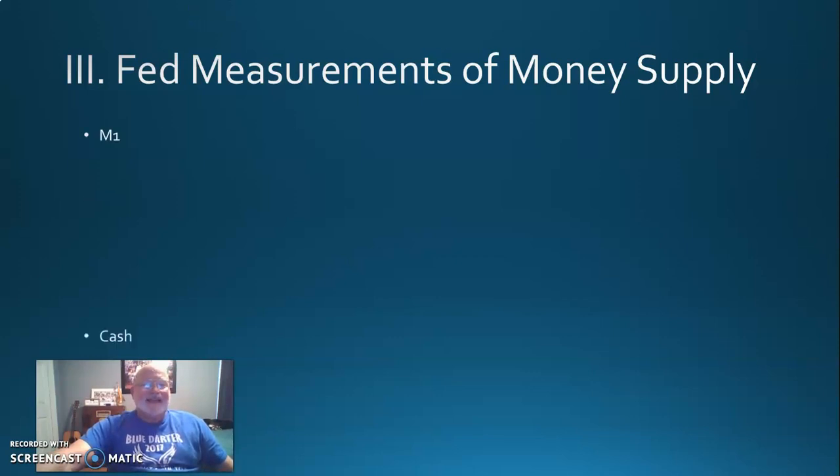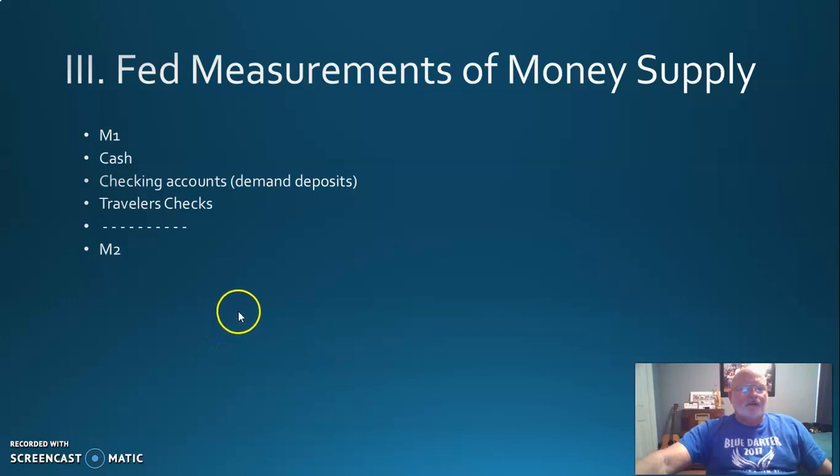So there's M1. I hope you remember doing this. M1 is three things: cash, which is currency, coins and paper money; cash checking accounts, also called demand deposits; and travelers checks. Those three things. And then comes M2. This is money. M2 also includes, this tricks up a lot of kids, this also includes the three things from M1: cash, checking accounts, travelers checks.